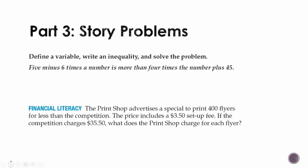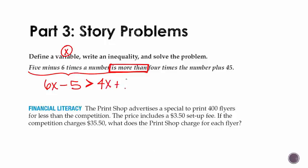So that brings us to everyone's favorite, a story problem. So this first one says define a variable. Let's use x. That's our favorite. Write an inequality. And then solve it. So 5 minus 6 times a number. Remember the word is means equals. So let's just look at this. 6 times a number. And then 5 minus that stuff. Is means equal when it's by itself. But we have is more than. Pay very close attention to that. Is more than is our symbol for greater than. 4 times the number plus 45. So we have 4 times the number plus 45.